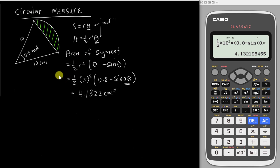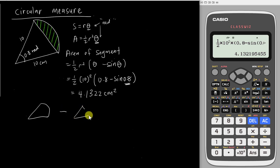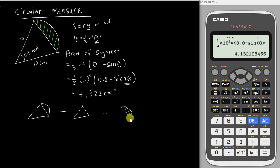If you want to do it separately, you need to use the area of sector minus the area of triangle. You can see the pattern: the sector is the whole shape, and then minus the triangle gives you the shaded region.